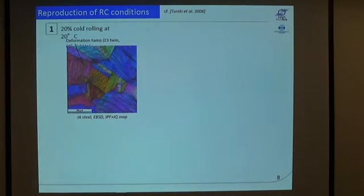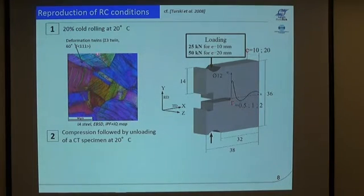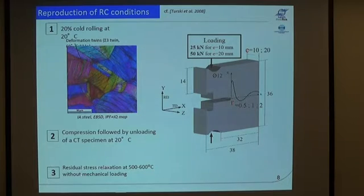So how did we try to reproduce the conditions for reheat cracking? We were inspired by work by Tursky. So we had first rolled the material so we do cold rolling to introduce some strain. So 20% cold rolling we did in the lab and you end up with deformation twins you can see here in the EBSD. Then we take this steel that has been rolled and cut out a specimen that looks like this. So this has a notch root it's not a classical CT specimen and we go and compress here to 25 kilonewtons and unload and then we end up with a residual stress field that looks like this. So when we put this into an oven in a way we have a tensile machine in the oven without a machine because we have residual stresses that can then relax while you have the sample in the oven for some time.